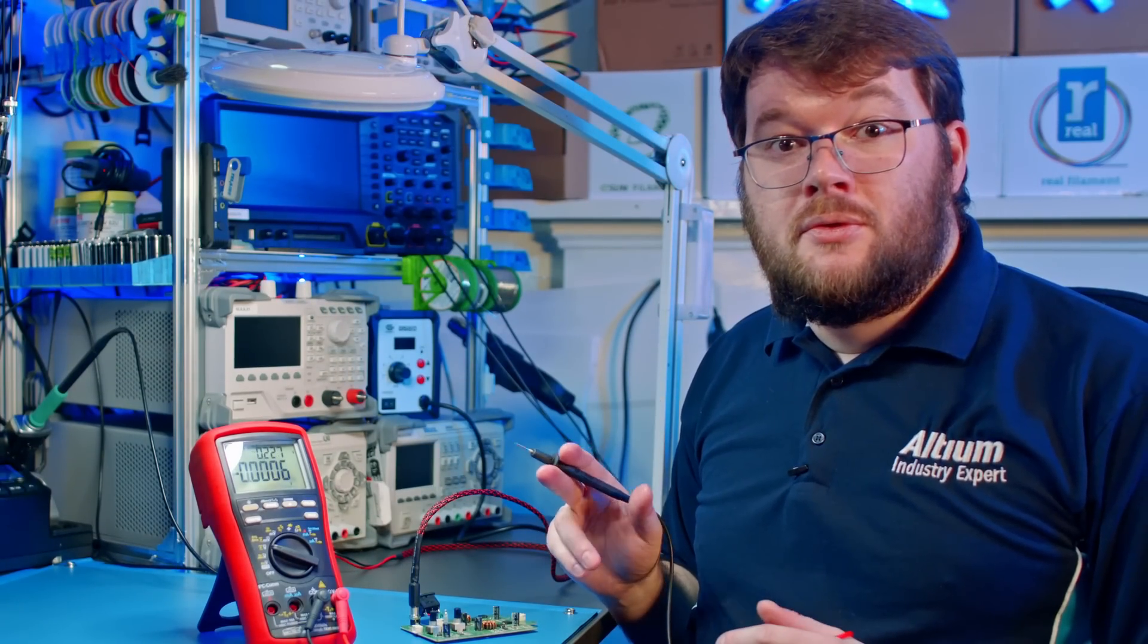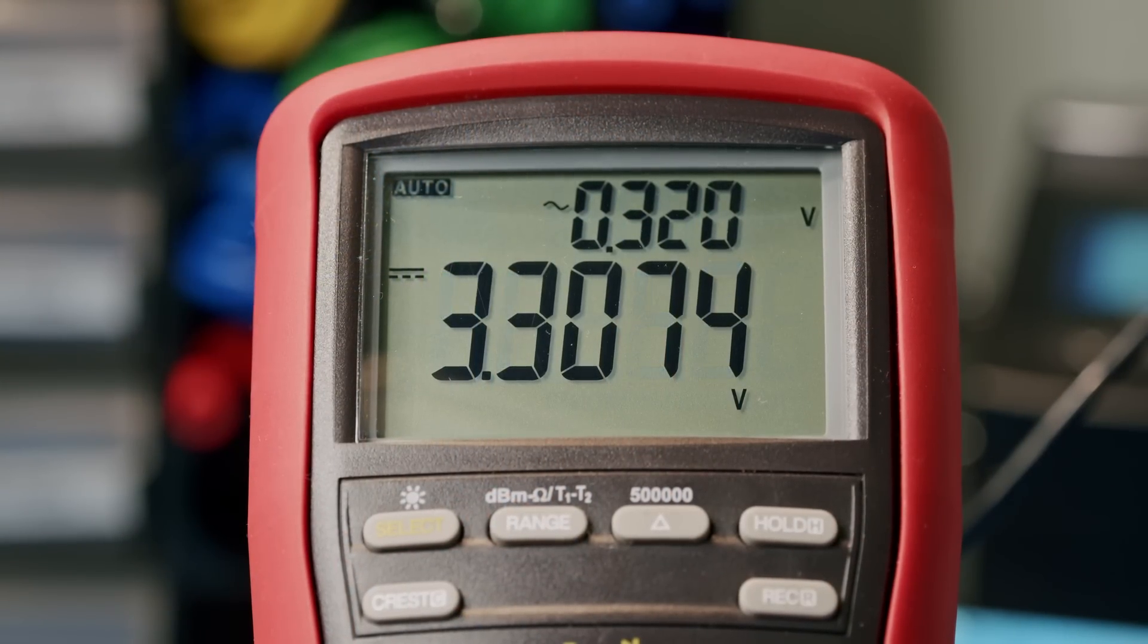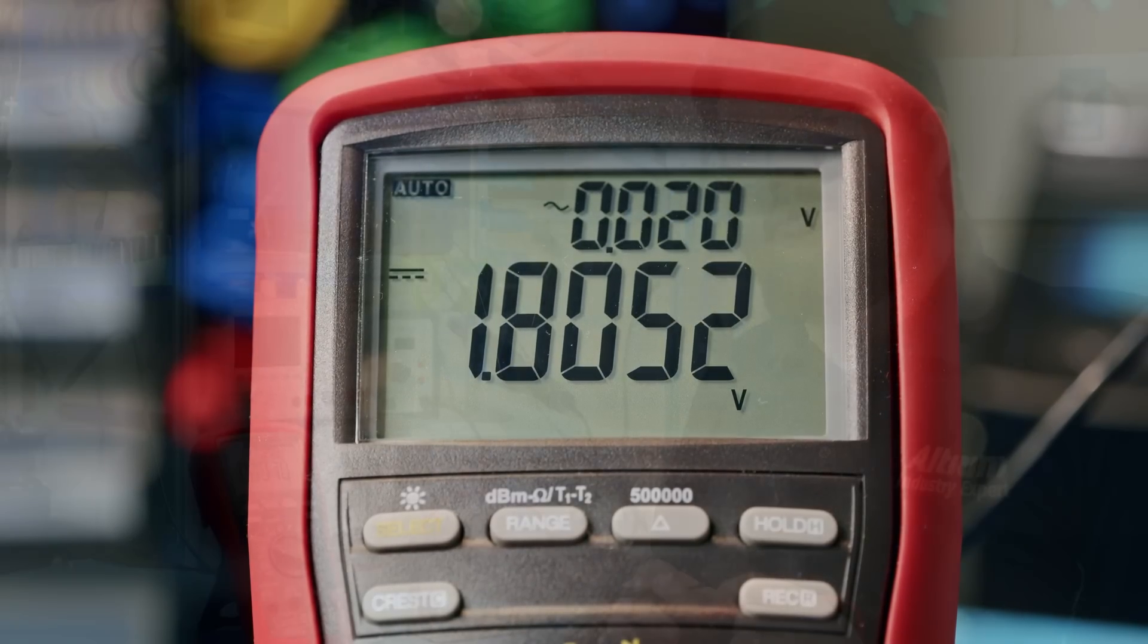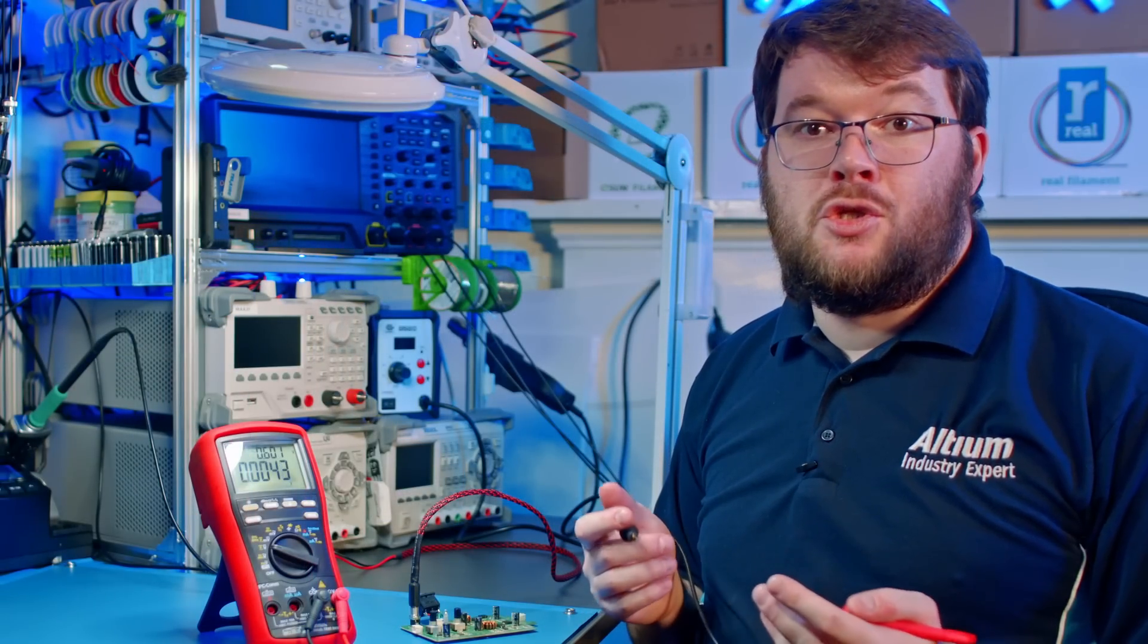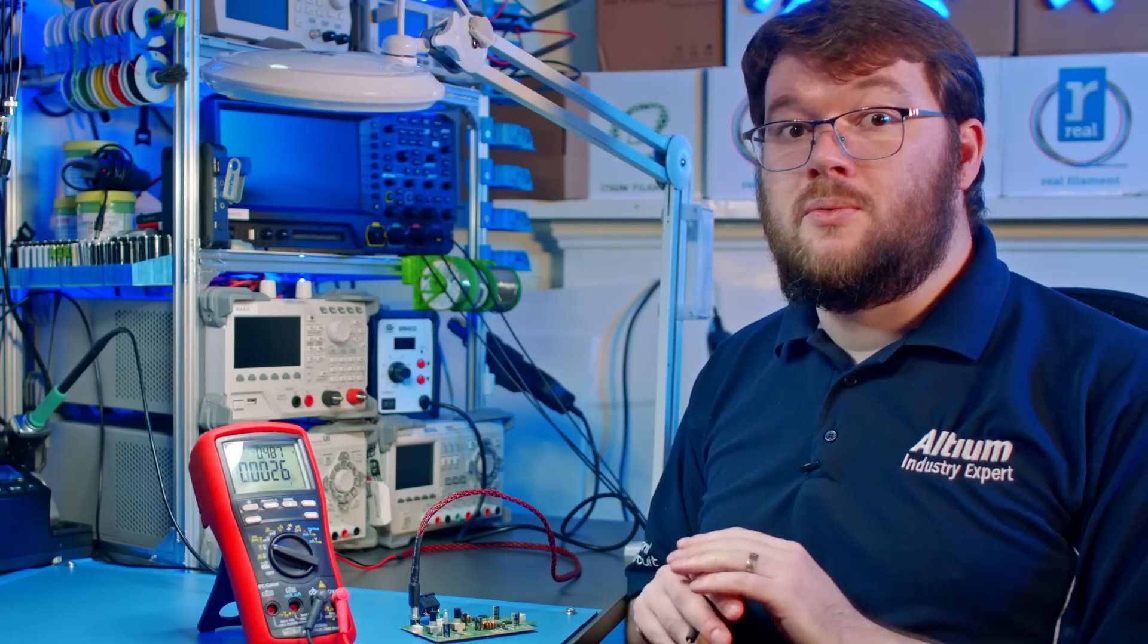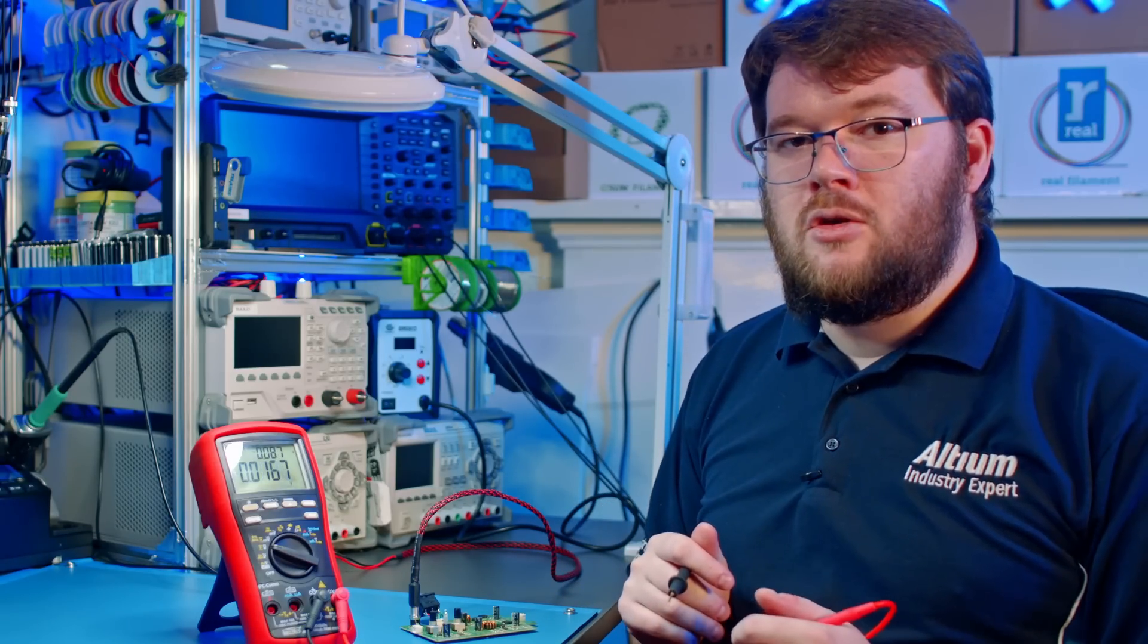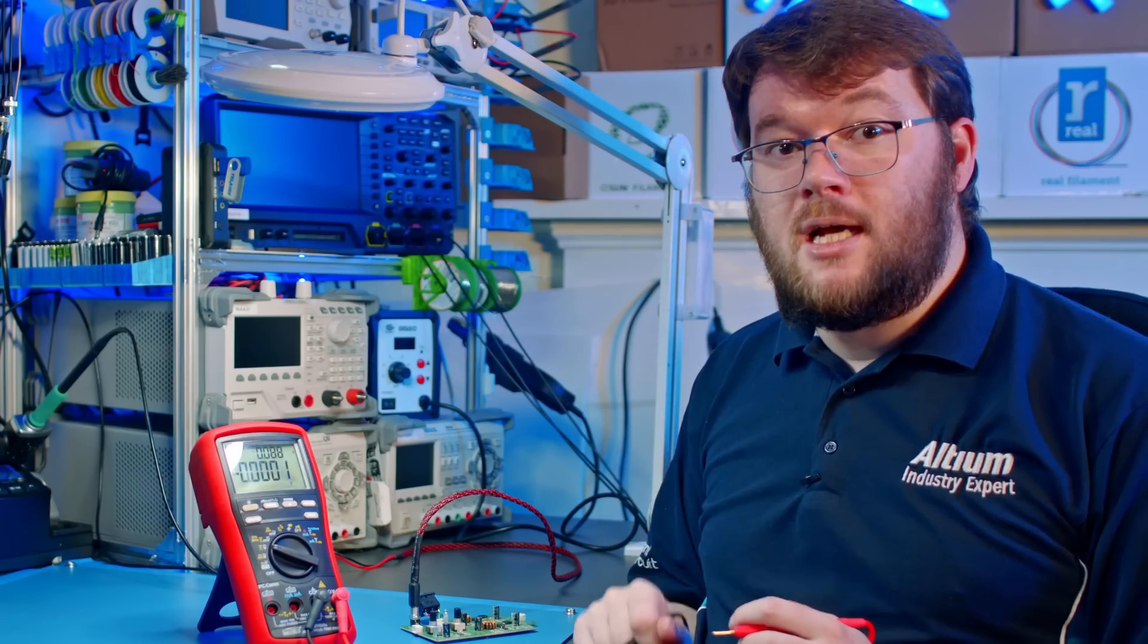It's essential to check the voltage on all power rails as well as any other voltage points in the circuit that are crucial to its operation. By ensuring that all the voltages are within the expected range and that there are no problems with the voltage regulation outputs, you can be confident that your board is working as designed.